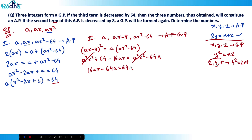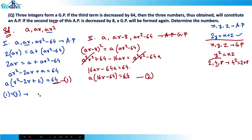Taking a as common from equation two: a(16r − 64) = 64. From equation one: a(r² − 2r + 1) = 64. Since both equal 64, we can equate them: a(r² − 2r + 1) = a(16r − 64). Cancelling a from both sides gives r² − 2r + 1 = 16r − 64, which simplifies to r² − 18r + 65 = 0.